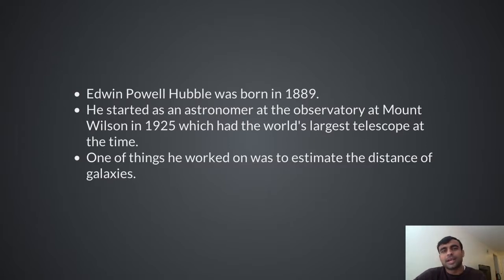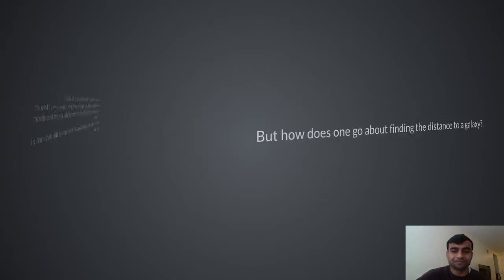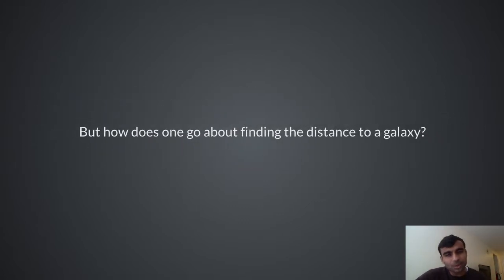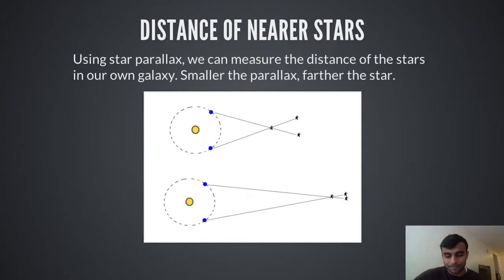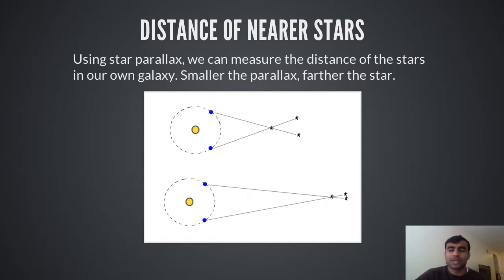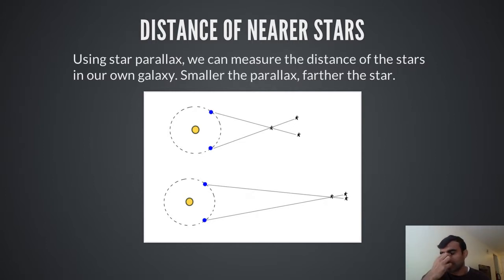Mount Wilson at that time had one of the biggest telescopes in the world. But the question is: how does one go about finding the distance to a galaxy? The answer is that you can estimate the distance of stars that are near to you using star parallax, which we talked about in one of our older lectures. The farther the star, the lesser the parallax. Let's talk about parallax quickly.